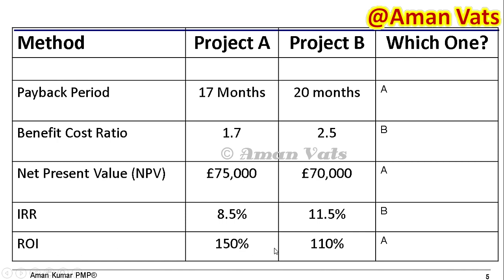Return on investment — A is 150%, B is 110%, so A is selected. When we tally the scores, three parameters favor A and two parameters favor B. If we use a scoring model, A wins. However, this depends on various factors as discussed in the previous video — organizational assets, capability, feasibility, and viability are all considered. This scoring model is one approach you can use.